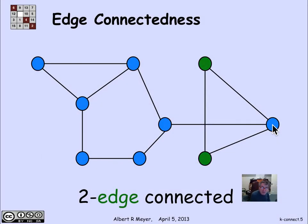Here's an example of two vertices, these two green vertices that are 2-edge connected. That means I can remove any number of edges less than two, which is to say one edge, and they'll stay connected.